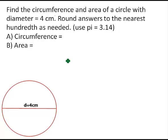In this problem, we're asked to find the circumference and area of a circle with diameter equal to 4 centimeters. Round the answers to the nearest hundredth as needed and use the value of pi to be 3.14.